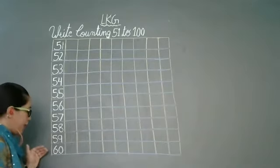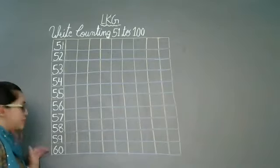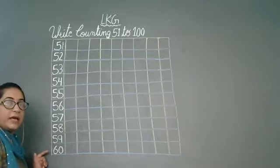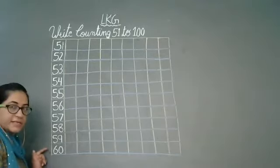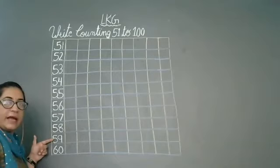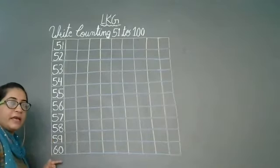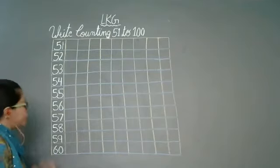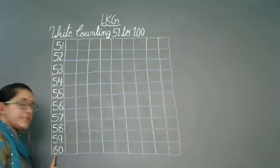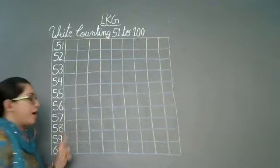5 ki line me end me hum kya likhenge? 6, 0. 5 ke baad me kya aata hai? 6. 6 ha na? Toh jab yeh 5 ki line end hoi hai, toh hum 5, 9 ke baad kya likhenge? 6, 0. Or jab hame next line start karne hai, toh hum ishi number se 6, 1. Okay.